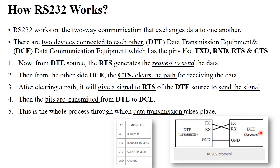After clearing the path, the receiver sends an RTS signal back to the DTE, indicating that the receiver is ready for receiving data. After getting this RTS signal from DCE, the DTE sends data to the DCE — meaning the computer sends data to the modem bit by bit using a serial cable. The receiver receives the complete data and if needed transmits data back to the computer. In this way the whole data transmission process takes place using the request-response protocol, and for this serial communication RS-232 protocol is used.